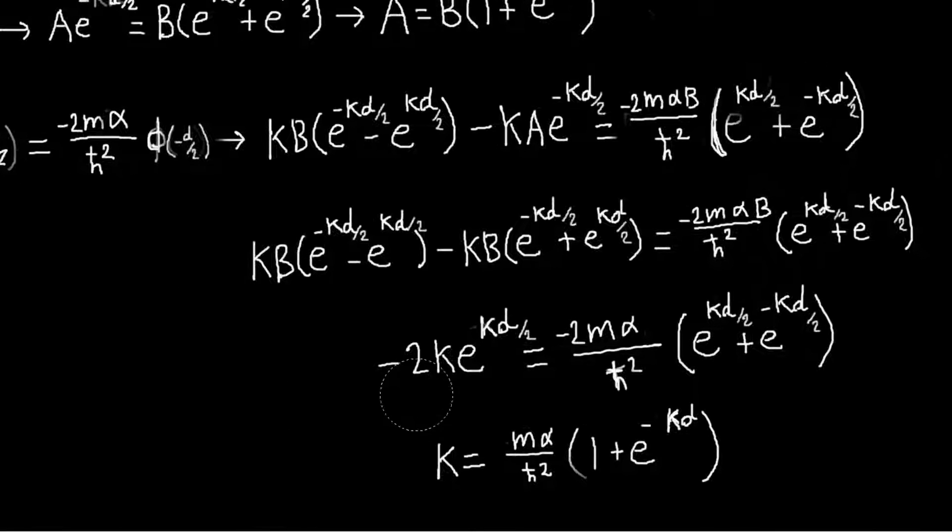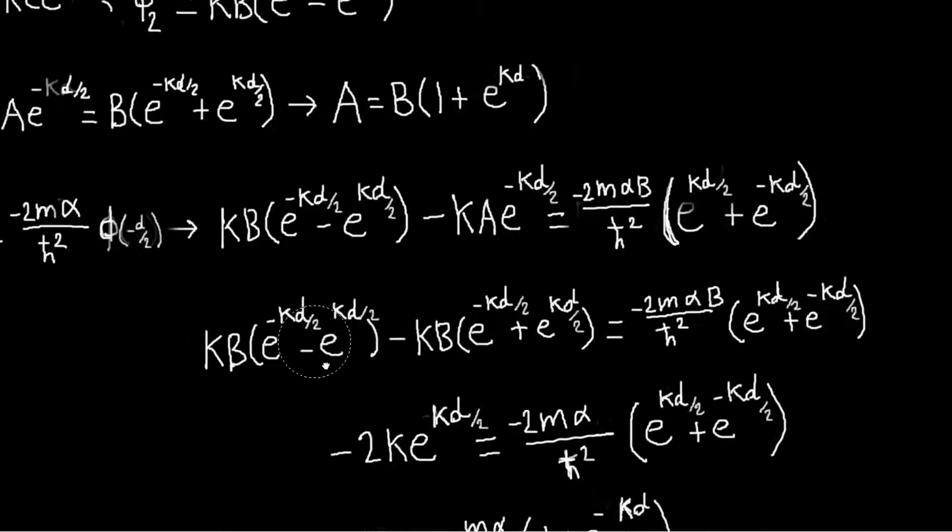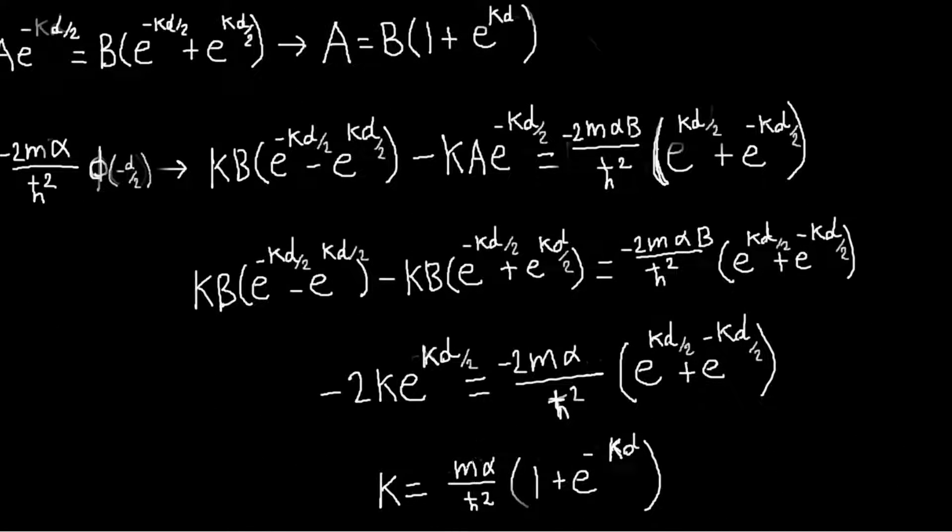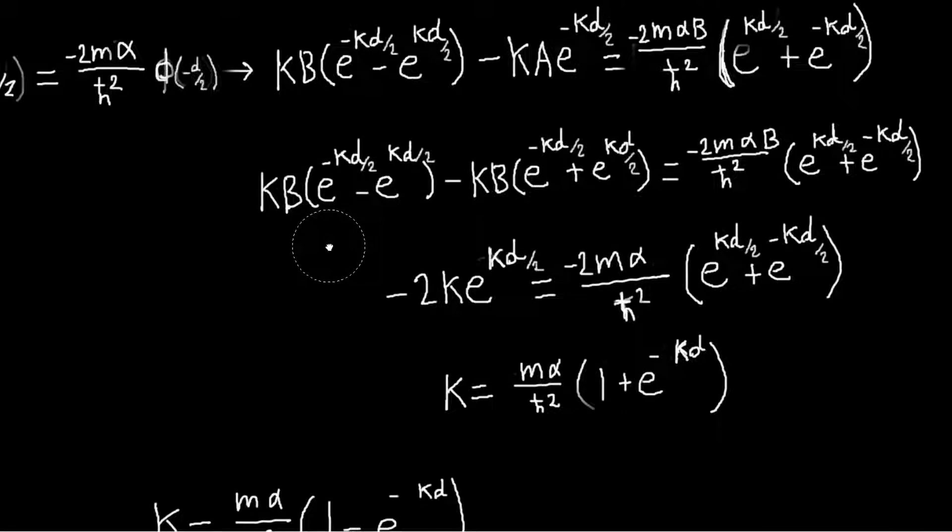And after that, the problem is pretty much solved. You've reduced... You found the eigenenergies in principle, and then you have one coefficient left over, which is b, which is determined from the normalization.